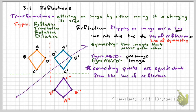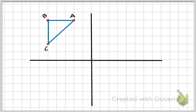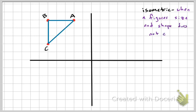When we start reflecting across diagonal lines, that's when you need to know what the rule is. So let's look at this figure — you have ABC triangle drawn on the X and Y axis. Isometric means when a figure's size and shape does not change during a transformation. Let's first go ahead and reflect over the line X equals negative one.